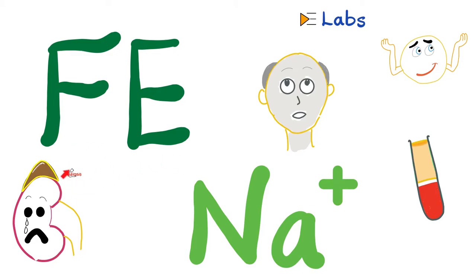Hey guys, it's Medicosis Perfectioneros, where medicine makes perfect sense. Let's continue our labs playlist. In previous videos in this series, we talked about urine uric acid, urine chloride, urine potassium, Bence-Jones proteins in the urine, urine casts, urine protein, urine white blood cells and red blood cells, urine catecholamines, and even urine bilirubin and urobilinogen.